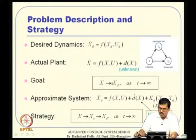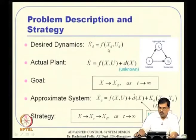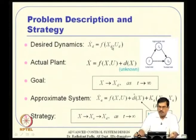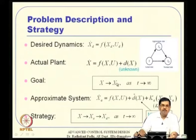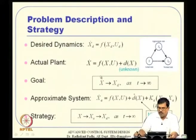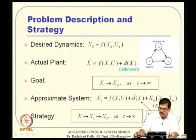Our objective is that the states X of the actual system should go to the states X_D of the desired system. X_D has already satisfied the necessary design objectives, so it is a good trajectory to track. Our objective is that X should go to X_D as soon as possible — because from there it will follow X_D anyway. The problem is that Ẋ contains D(x), which we do not know. So the idea is to approximate D(x) using a neural network or function approximation tool. Because this approximation can never be exact, the dynamics with the approximation D̂(x) gives a different state, which I call X_A — the approximate system dynamics.